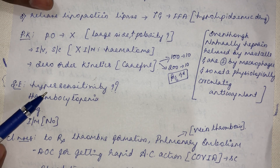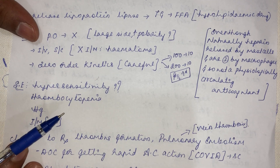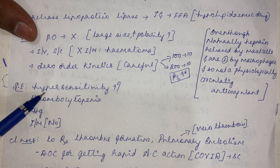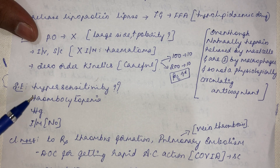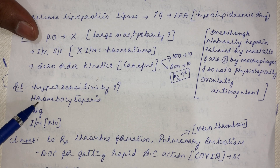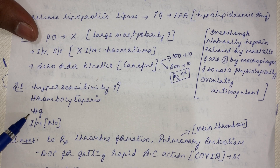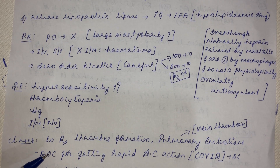Side effects of heparin include hypersensitivity — likely because heparin is sourced from porcine and bovine animals. At high dosage it causes thrombocytopenia due to platelet destruction. It also causes hemorrhage since it inhibits clot formation, and must not be given through the intramuscular route.